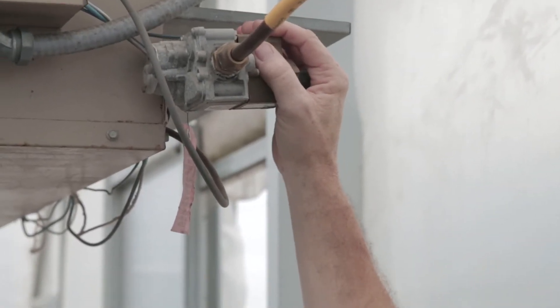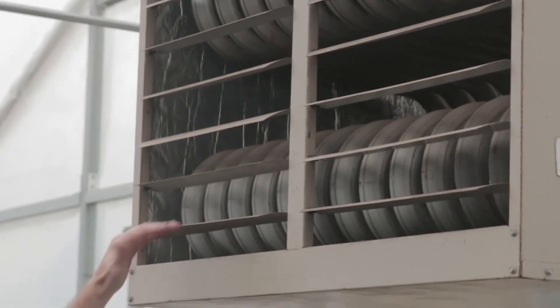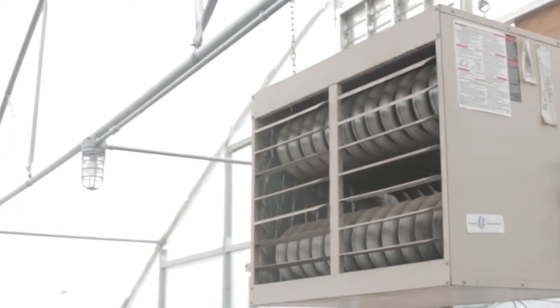The high-efficiency spark ignition gas heater provides the heating source for your growing environment. The heater, coupled with the horizontal airflow fans, will prevent cold spots within the structure.